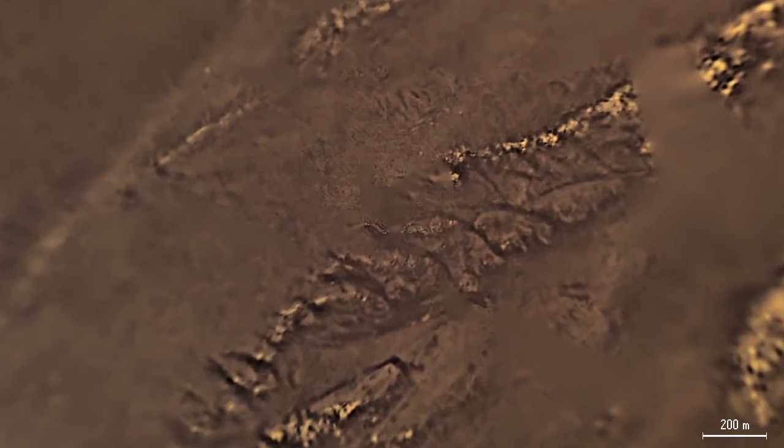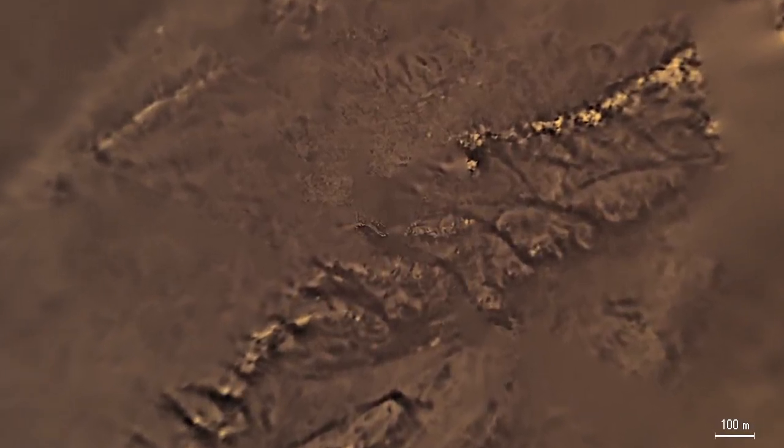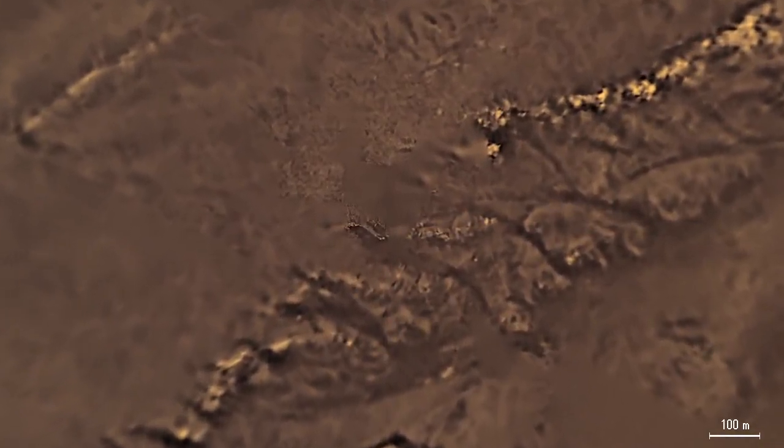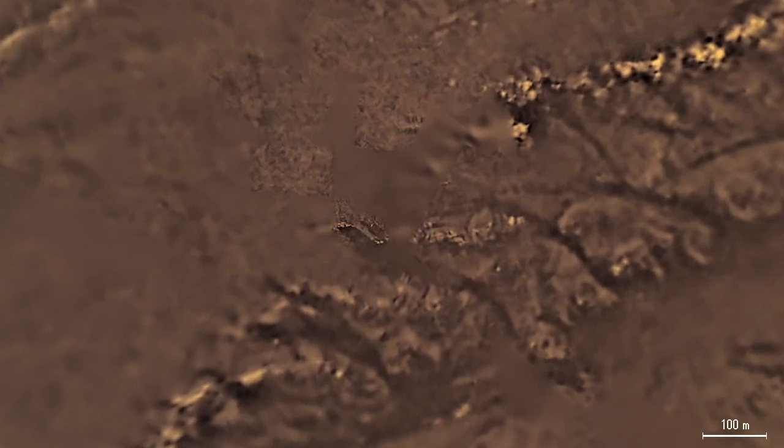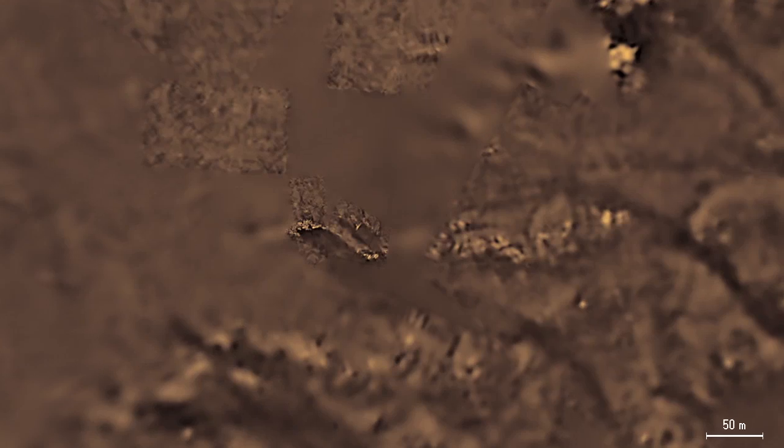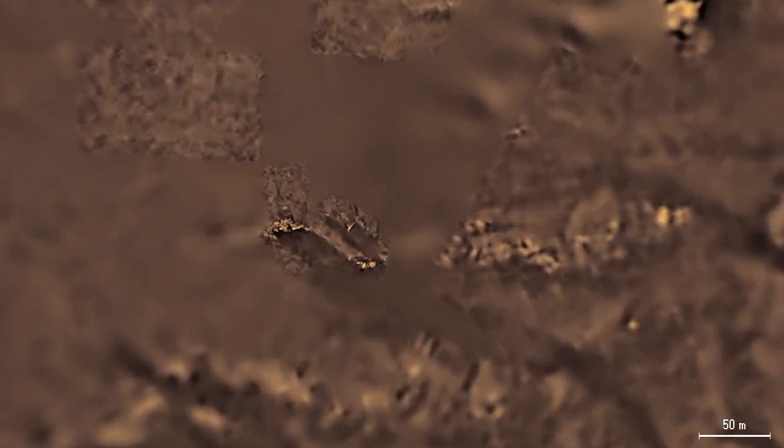Some regions were imaged with high resolution just before Huygens landed on Titan, especially the area to the west of the landing site. Most of Titan's surface is covered by dark organics that are produced in the atmosphere and slowly settle down.